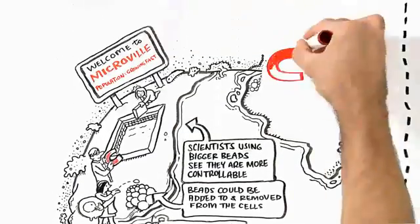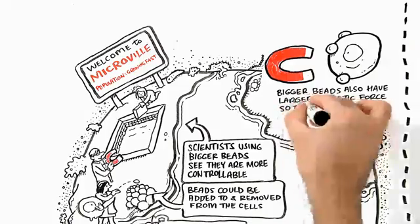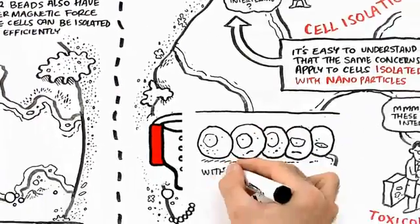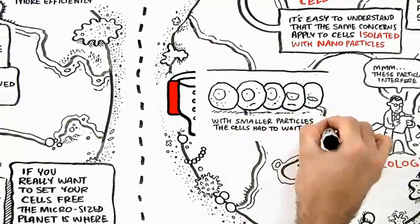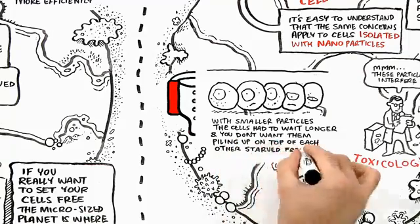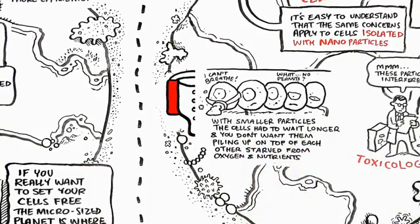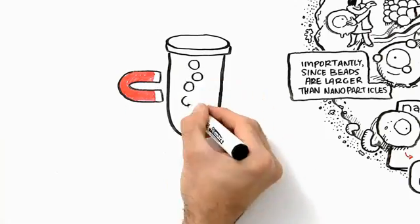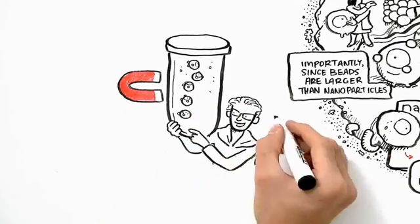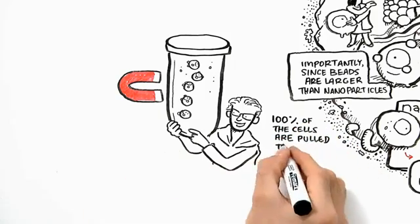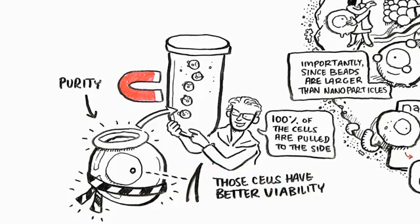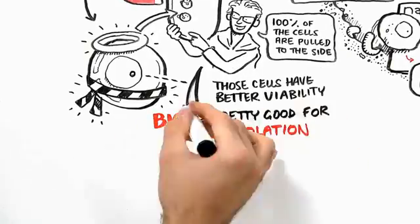The bigger beads also have larger magnetic force, so the cells can be isolated more efficiently. Dr. Fossman's team from Harvard found that with smaller particles, the cells had to wait longer. And you don't really want them piling up on top of each other, getting starved from oxygen and nutrients. So she noticed a big improvement in the yield of cells when using micro-sized beads as opposed to nano-sized particles. In a short period of time, 100% of the cells are successfully isolated, and these cells have better viability and better purity. In other words, big is pretty good for cell isolation.